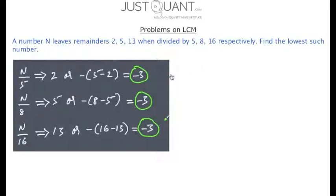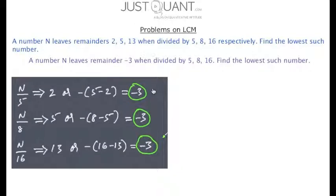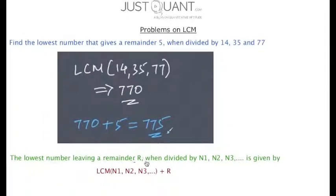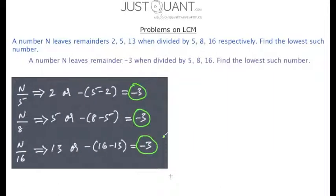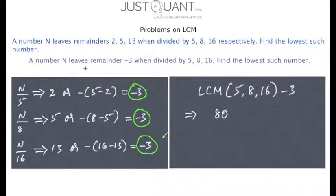So n leaves the same negative remainder −3 when divided by 5, 8 and 16. We can rephrase this as: find the lowest number n that leaves remainder −3 when divided by 5, 8 and 16. This is similar to the previous problem: the lowest number leaving remainder r when divided by n1, n2, n3 is LCM(n1, n2, n3) + r. So we have LCM(5, 8, 16) + (−3) = 80 − 3 = 77. Hence 77 is the least number that gives remainders 2, 5, 13 when divided by 5, 8 and 16 respectively.